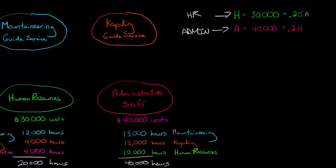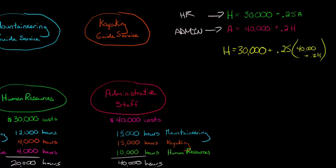There's a number of ways you can start it. What I'm going to do is I'm going to take the top one, H equals 30,000, plus, and now I'm going to put 0.25, but now instead of A, I'm going to plug in this. This is A because we know that A is equal to 40,000 plus 0.2H. So here I'm going to put 40,000 plus 0.2H. So now let's just use algebra here. So we go H equals 30,000, and then 0.25 times 40,000 is 10,000.